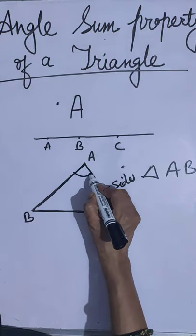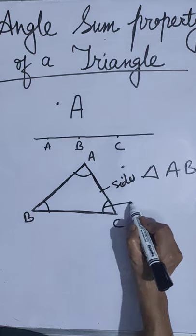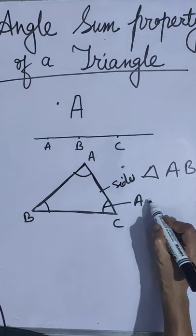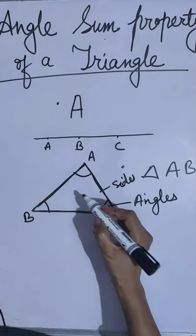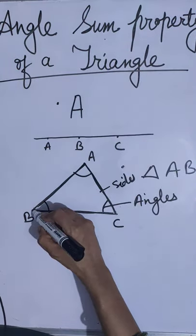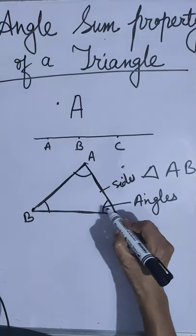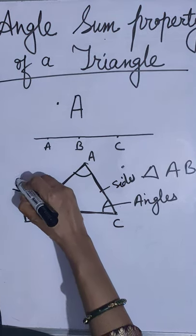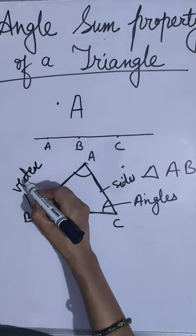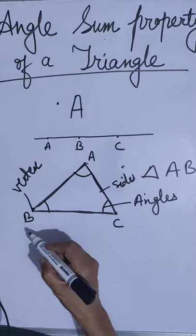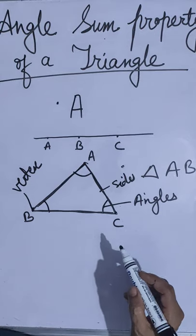How many angles does it have? Three angles — one, two, three. The names of the angles are angle A, angle B, and angle C. How many vertices are there? The vertices are points A, B, and C — so it has three vertices. Triangle has three sides, three angles, and three vertices.